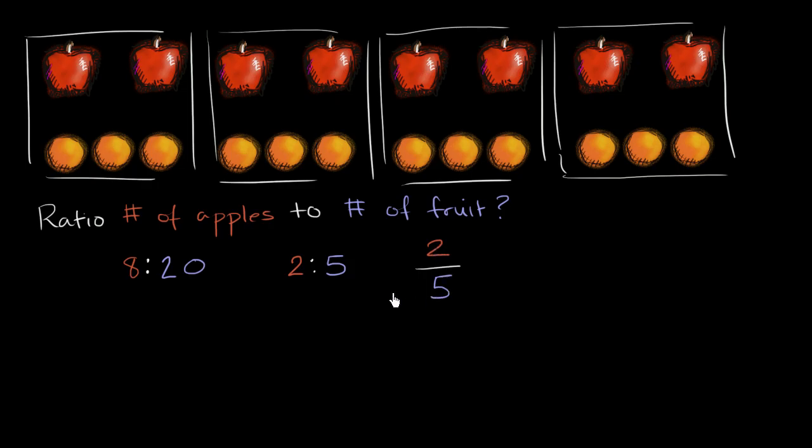This is telling us the fraction of fruit that are apples. So we could say two-fifths of the fruit—of the fruit, of the number of fruit, I guess I could say—is equal to the number of apples. Right, let me just say two-fifths of fruit, if we're just speaking in more typical terms. Two-fifths of fruit are apples.